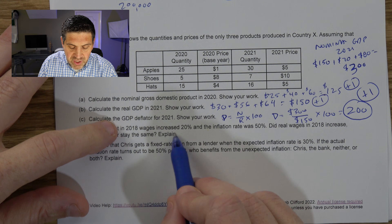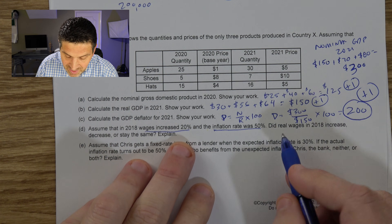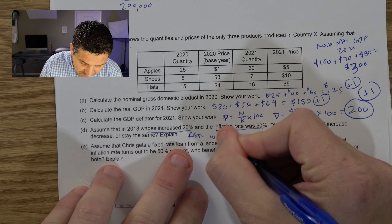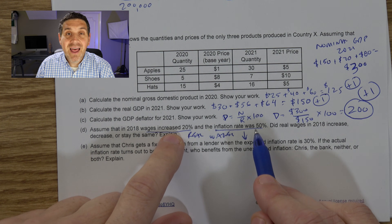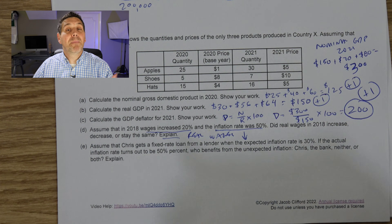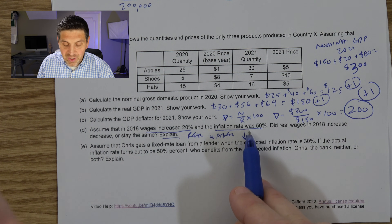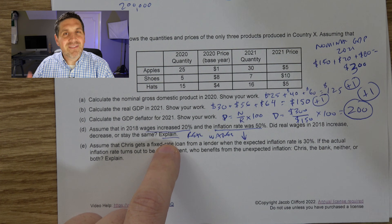Assume wages increased 20% and inflation was 50%. Did real wages increase, decrease, or stay the same? Real wages definitely decreased. If inflation is causing prices to increase at a faster rate than your wage, then your real wage falls. You're being paid in dollars that have less purchasing power. If the wage increase and inflation rate were equal, real wages would stay the same. But here inflation is eroding the value of those dollars, so purchasing power is falling. You must explain the purchasing power concept to get the point.